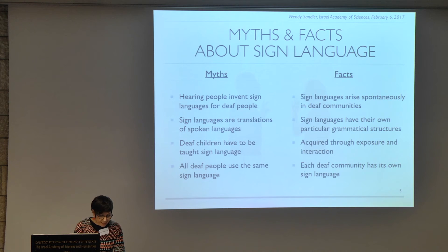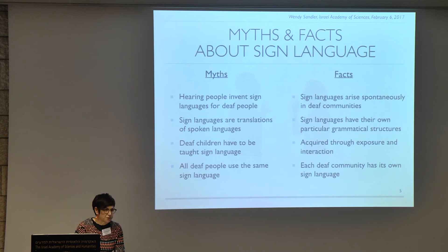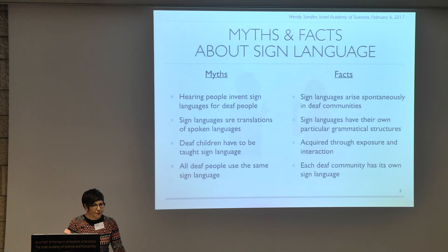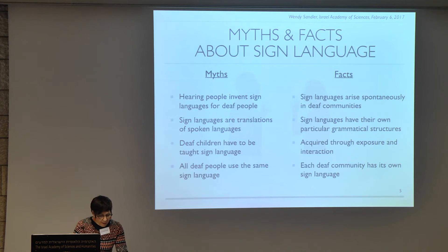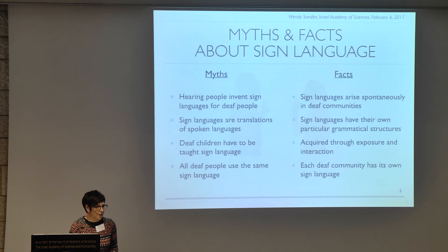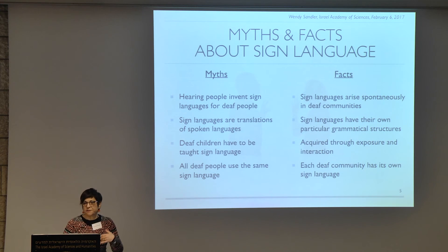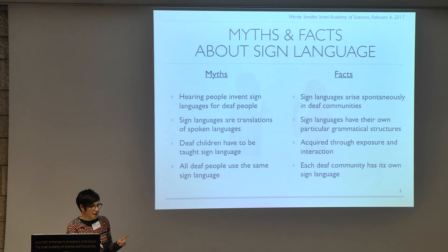The facts are that sign languages arise spontaneously in deaf communities. They have their own grammatical structure distinct from spoken languages, so American sign language and British sign language, even though the ambient language is English, are not mutually intelligible. They're acquired naturally through exposure and interaction. The ten percent or so of deaf children who have deaf parents, if raised in a deaf signing household, acquire sign language the same way hearing kids acquire spoken language, and on about the same timetable. That shows we're talking about a natural object here.